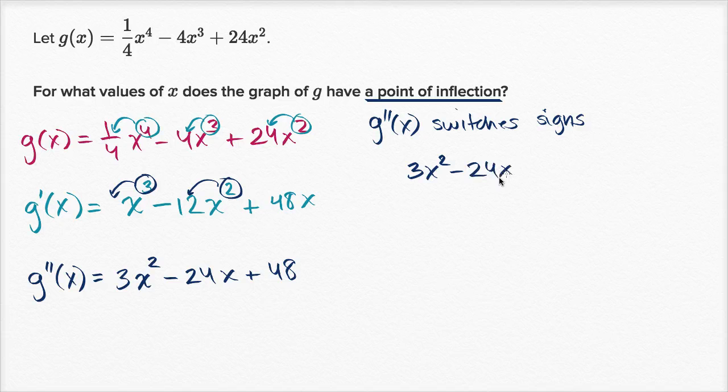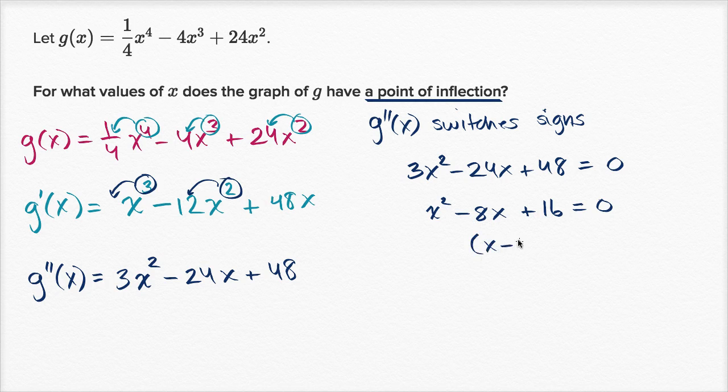3x squared minus 24x plus 48 is equal to zero. Let's see, everything is divisible by three, so let's divide everything by three. So you get x squared minus 8x plus 16 is equal to zero. And let's see, can I factor this? Yeah, this would be x minus four times x minus four, or you could just view this as x minus four squared is equal to zero, or x minus four is equal to zero. So, or where x equals four. So g prime prime of four is equal to zero.